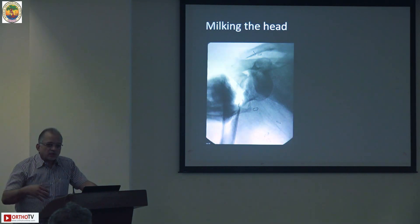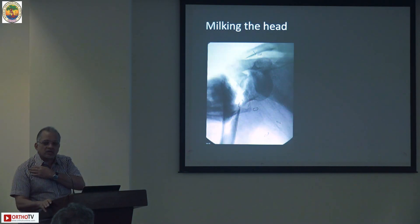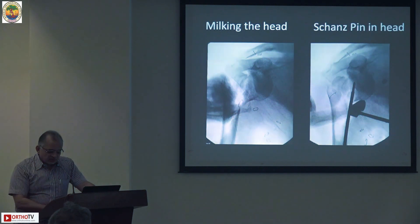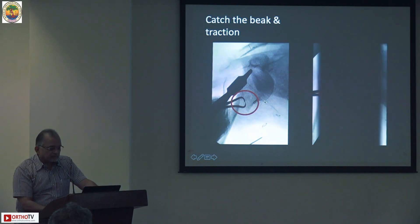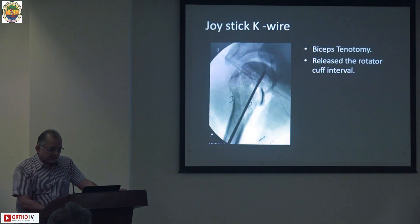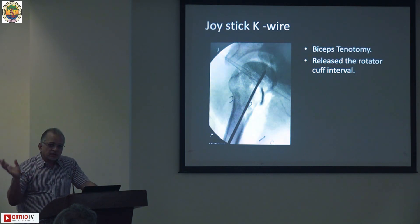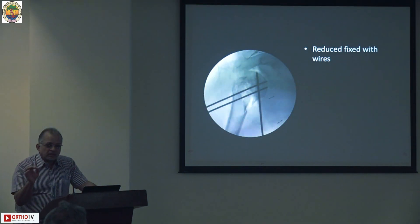To reduce this humeral head, you can simply milk it around the coracoid and conjoint tendon by flexing the arm, or you can put a Schanz pin in the head and try to reduce it, or use a towel clip and try to reduce it, or lever it out with a bone lever. All these maneuvers must be done gently and not repeated multiple times. The most commonly practiced method is straight away doing a biceps tenotomy after releasing the rotator cuff interval, which will reduce the humeral head back into the glenoid.